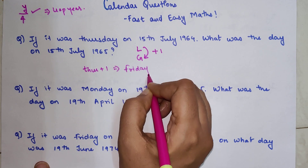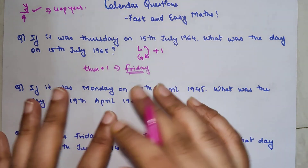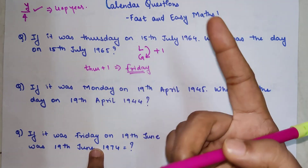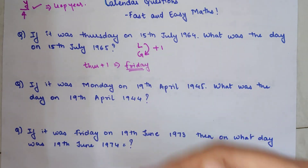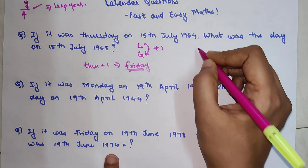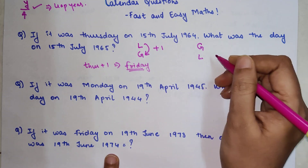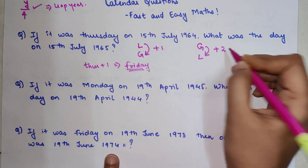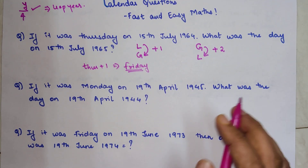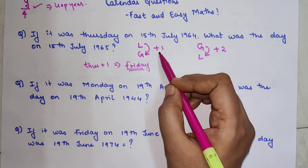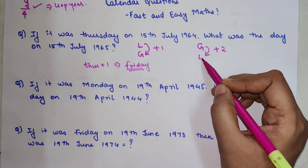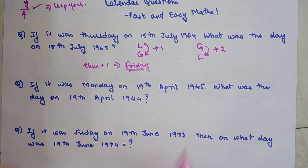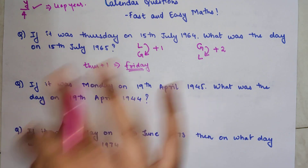So the answer becomes Thursday plus 1, which is Friday. Friday is your answer for this question. Remember: whenever you go from a leap year to a general year, you add 1 day. If it is the reverse — going from a general year to a leap year — you add 2 days. So leap to general is +1, and general to leap is +2.